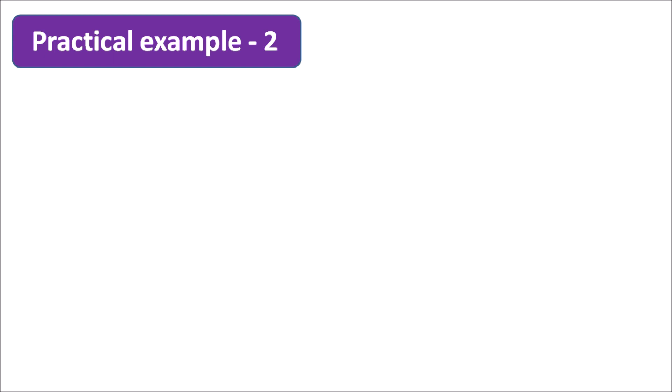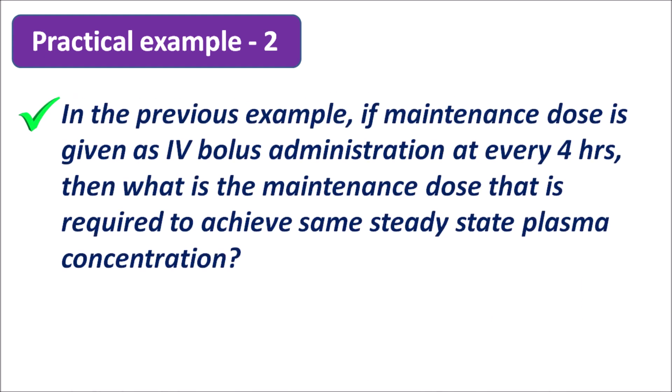Now let us go with practical example 2. In the previous example, if the maintenance dose is given as IV bolus administration every 4 hours, what is the maintenance dose required to achieve the same steady state plasma concentration? Two modifications: the route is IV bolus so bioavailability will be 100%, and the dosing interval is 4 hours instead of 6 hours.